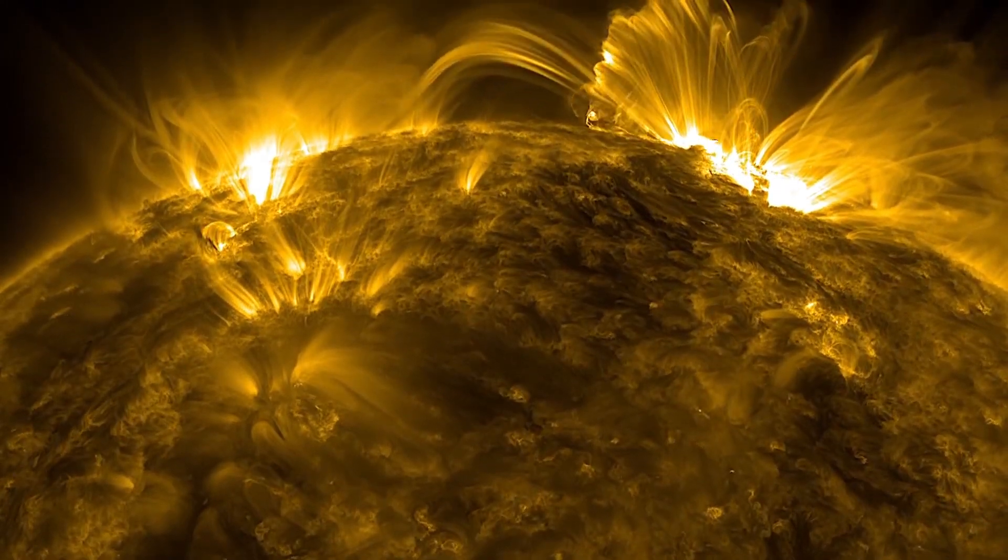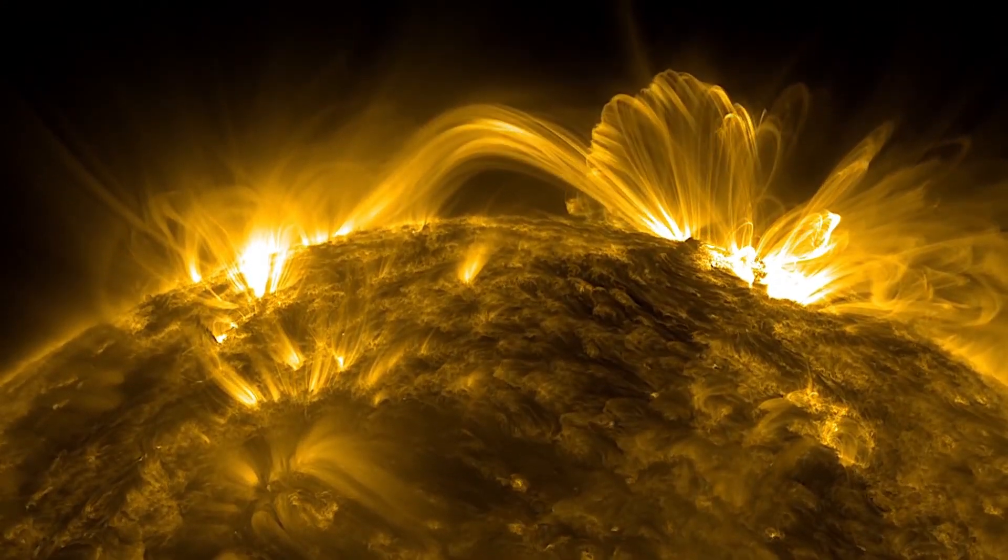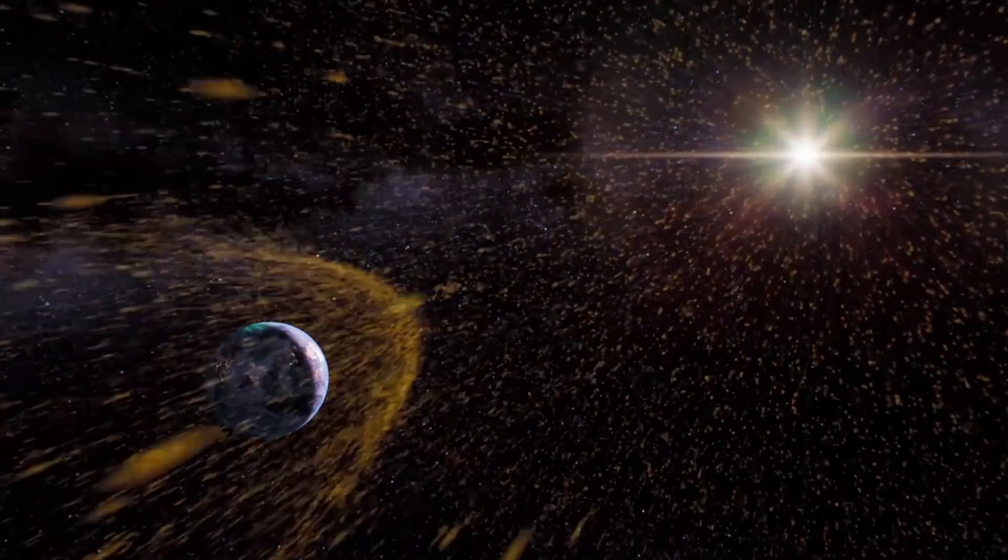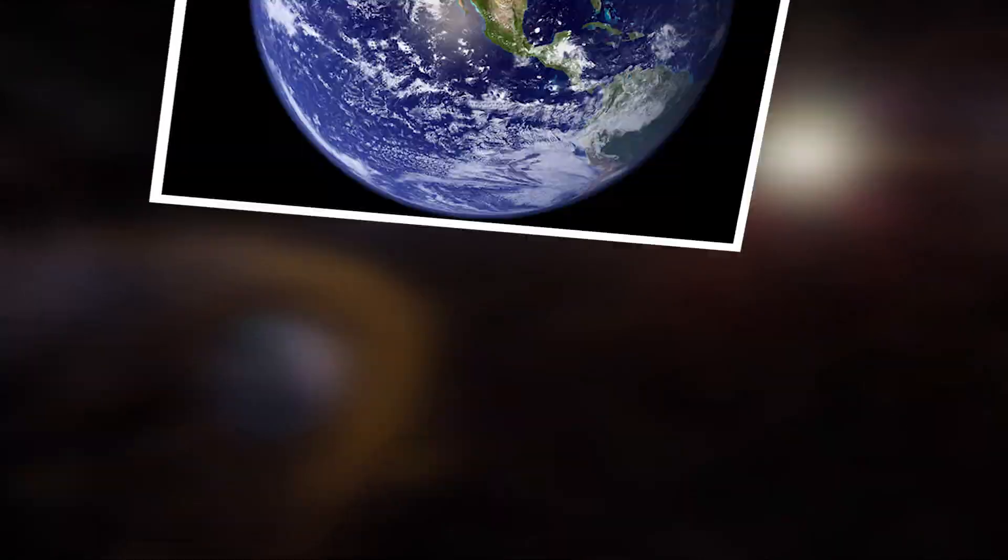Imagine a gigantic star with a radius a thousand times that of our Sun, extending beyond the asteroid belt and almost touching Jupiter. In this vast realm, Earth, Mars, Mercury and Venus would be devoured by the irresistible cosmic allure of Betelgeuse.